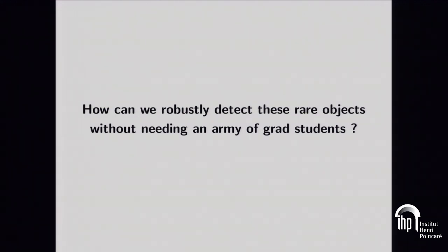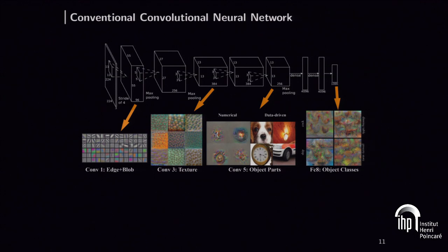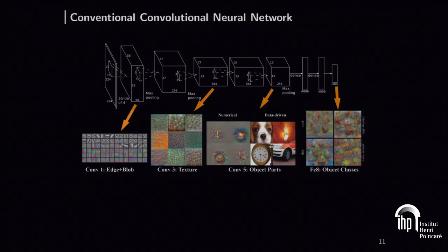So how can we robustly detect these rare objects at the scale of next-generation surveys without needing an army of grad students? One solution is to use automated techniques such as deep convolutional networks. The idea is you take an image as input, apply a set of convolutional filters to extract feature maps, and do this multiple times. As you go deeper in the network, you build higher and higher level representations of your data, to the point where at the last layers you can easily discriminate between different types of signals.